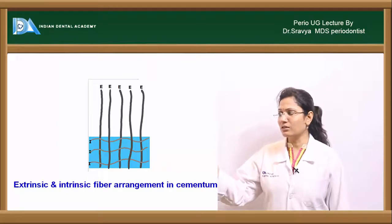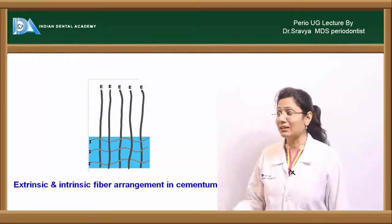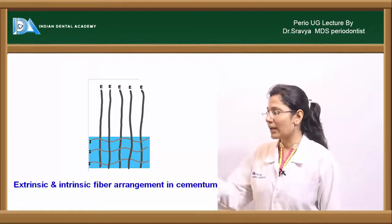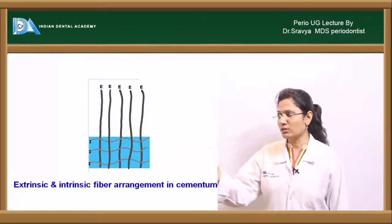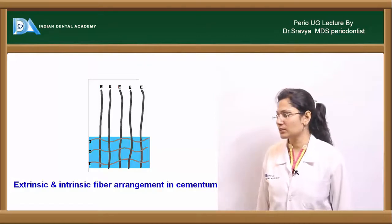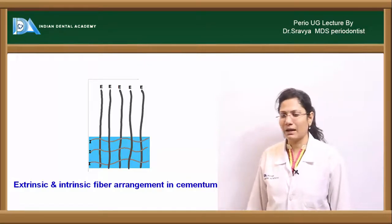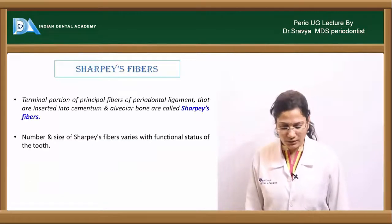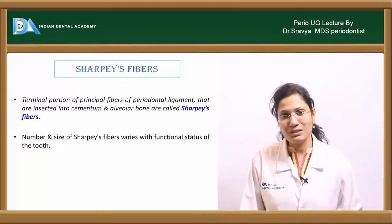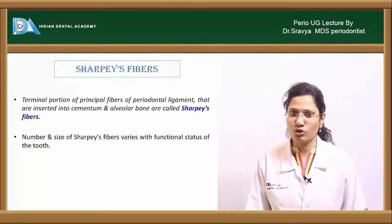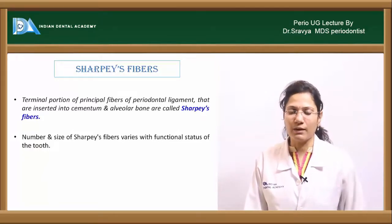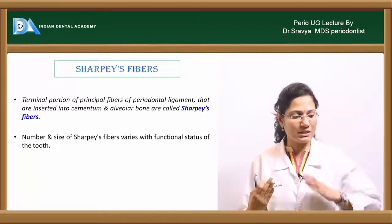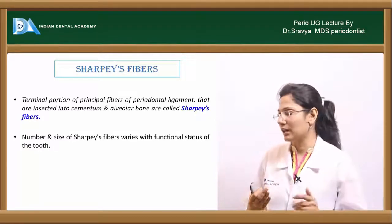Sharpey's fibers are the terminal portions of periodontal ligament fibers that attach into the cementum on one side and into alveolar bone on the other.